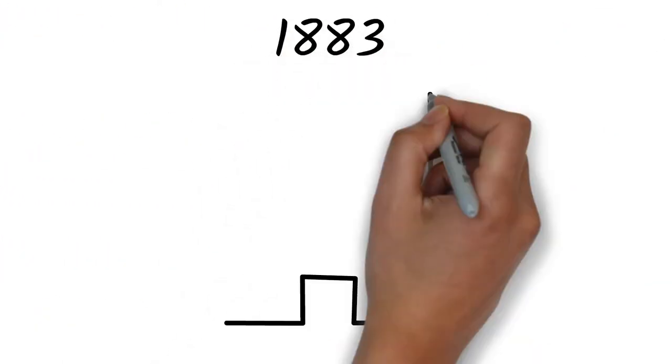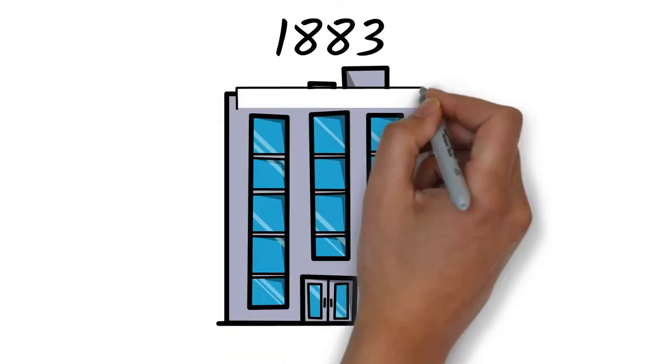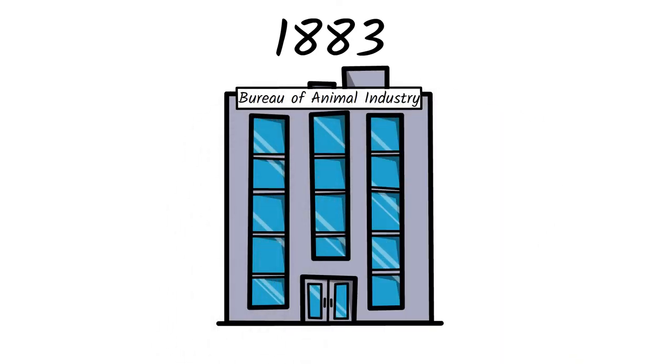In 1883, he was asked to establish a veterinary division within the department and this became the Bureau of Animal Industry, where he served as chief from 1884 to 1905.